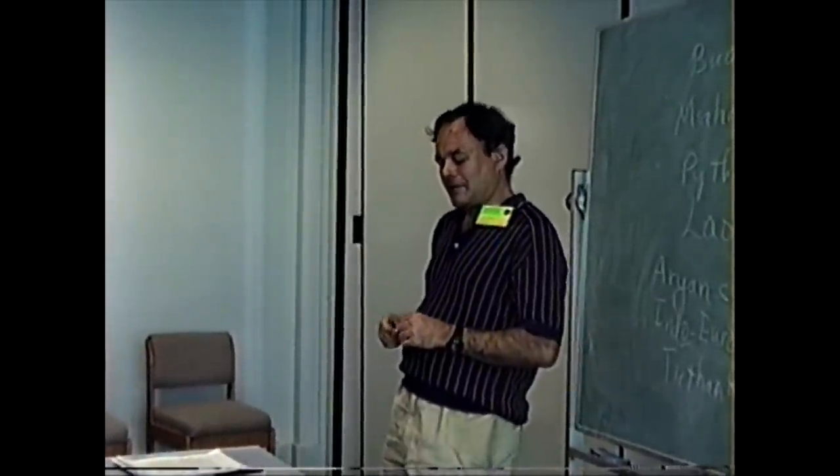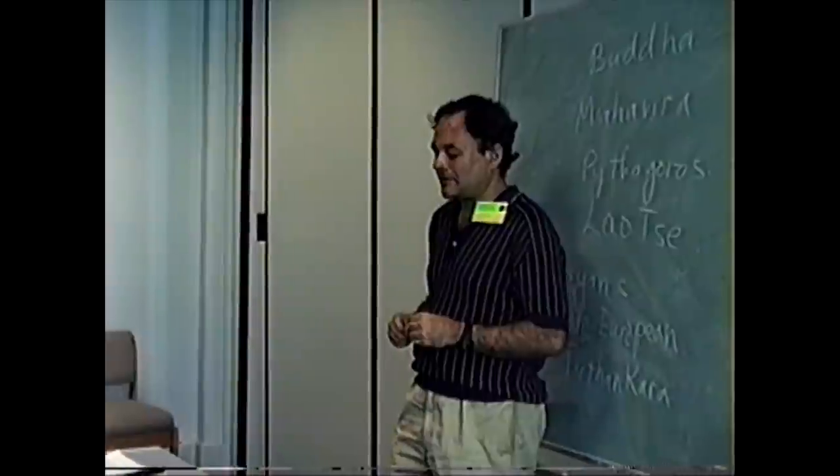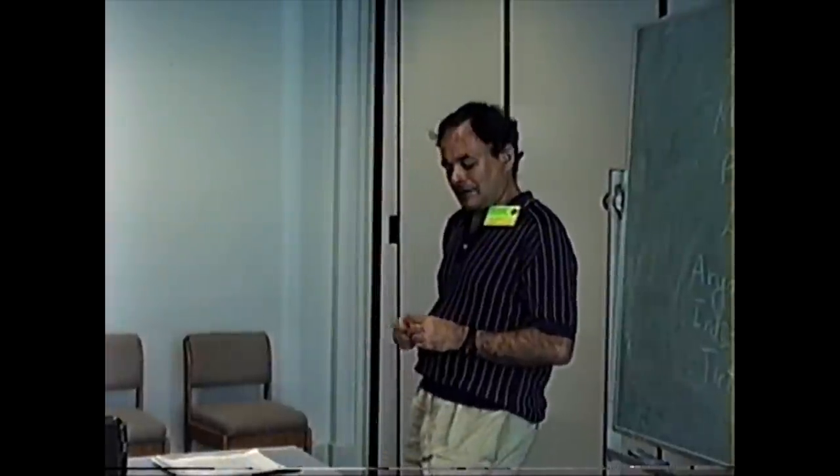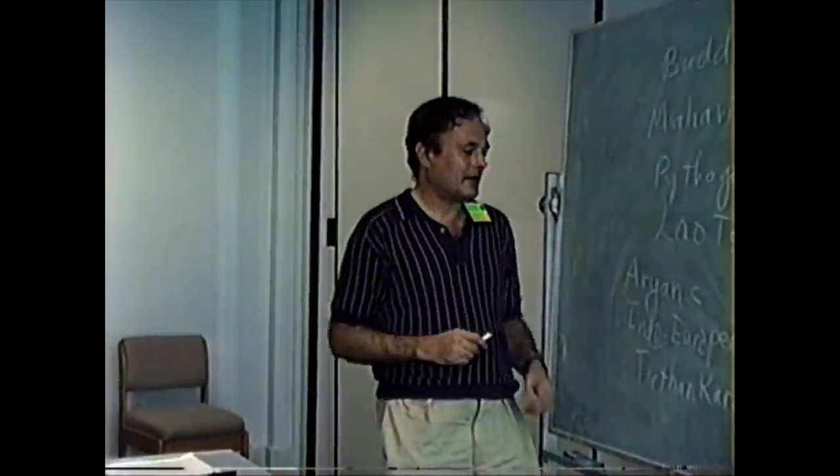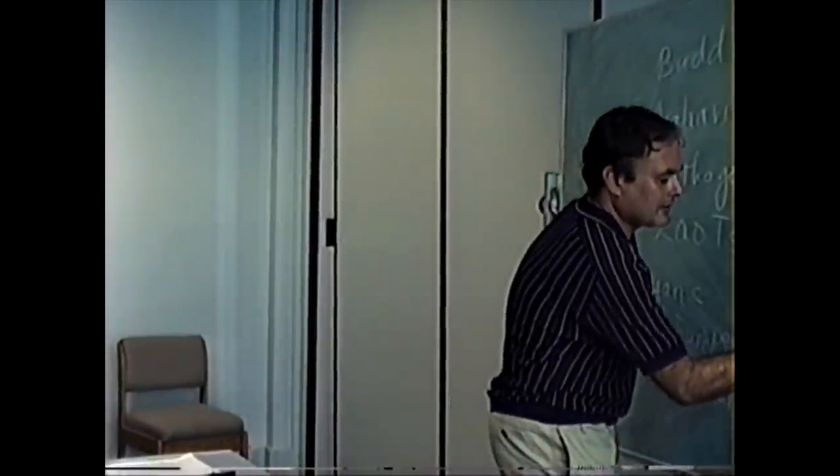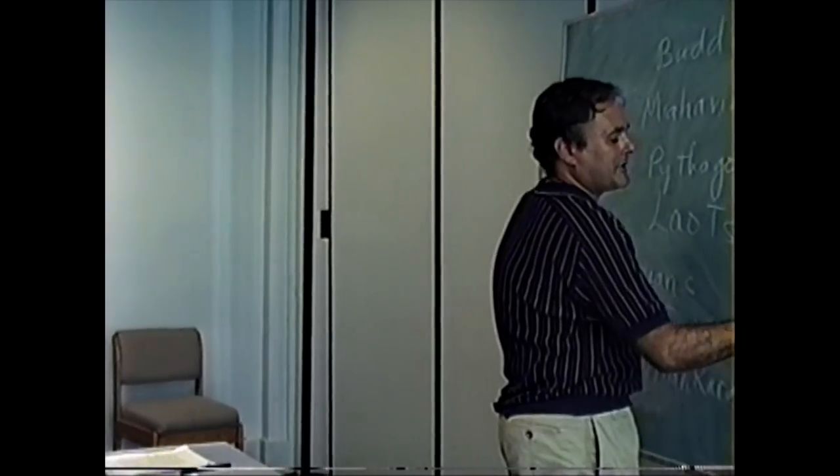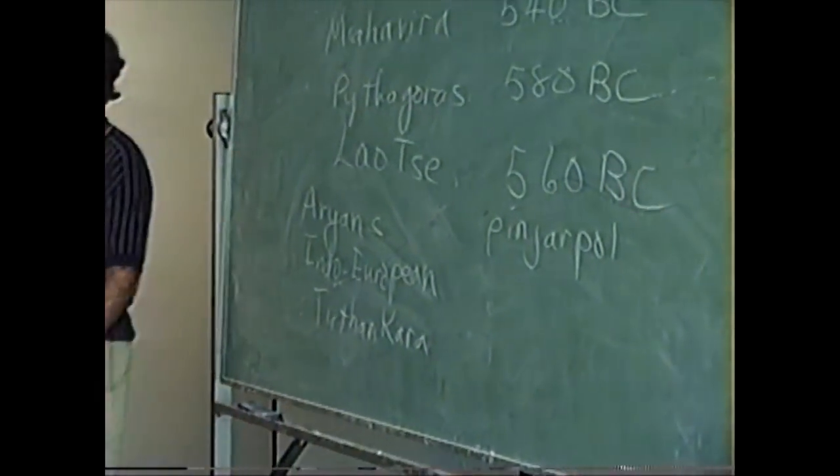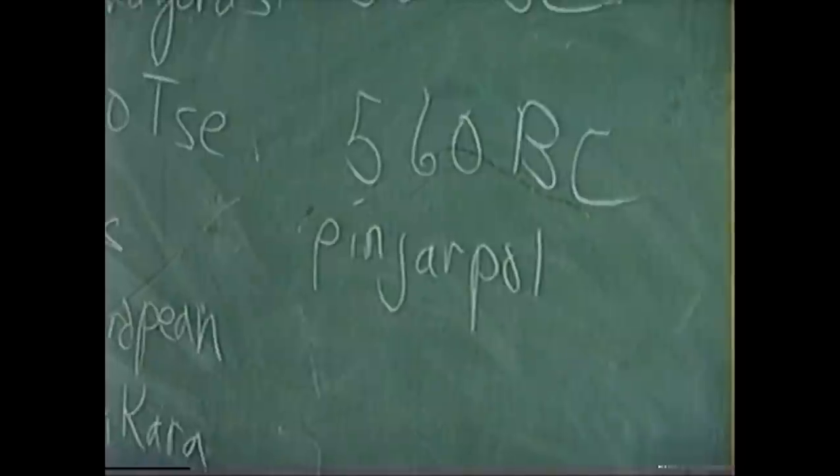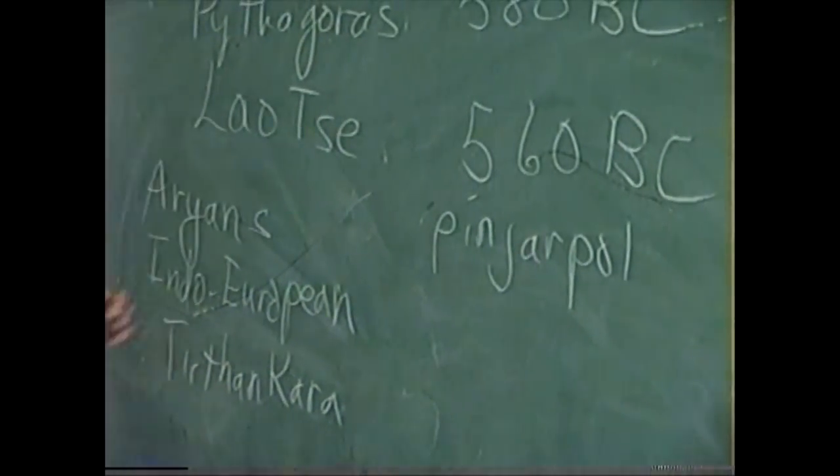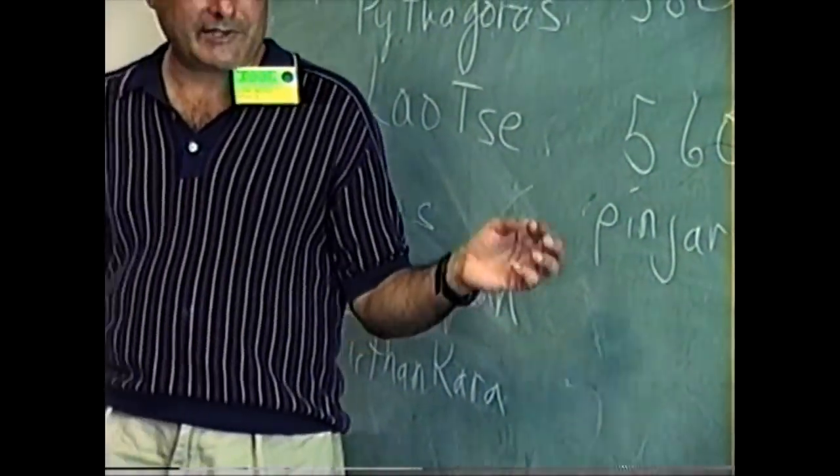The Jains were also the first vegetarian religious group to articulate their concern for animals. One of the most ancient institutions in Jainism is called the Pinjarpol. Pinjarpol is an animal hospital, or a rest home for animals. And this is a very venerable institution in Jainism. It even predates Mahavira.